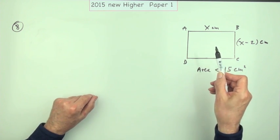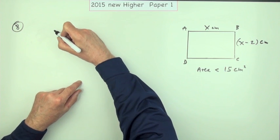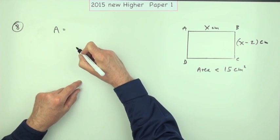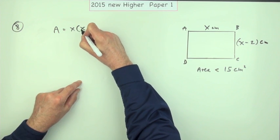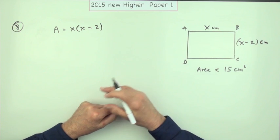Because the first thing you would say would be: how would you work out the area of that shape? Well, the area would be the length times the breadth. That's x times (x - 2). That's not worth a mark yet.